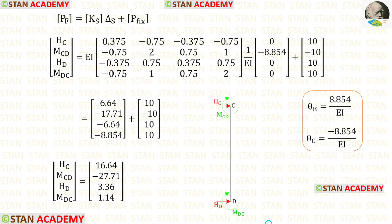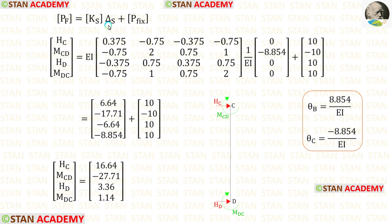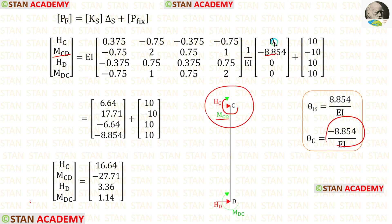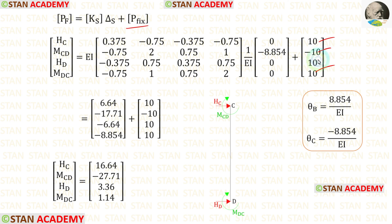Now let us find the final moments and reactions in column CD. We apply the element stiffness matrix. In column CD, at point C we have the second coordinate with moment MCD, so we apply theta C and 0 for all other members. Adding the fixed end moments and reactions, after calculation we get the horizontal reactions and moments for column CD. For MCD, we get a negative value, meaning it is acting in the anti-clockwise direction.